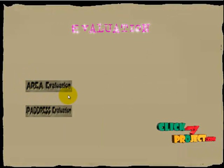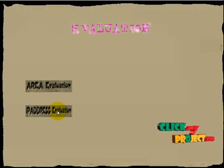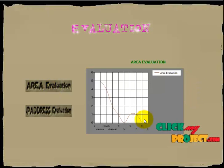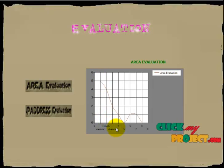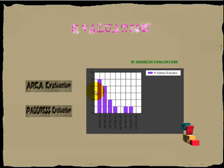After the map display, we go into evaluation. In evaluation, we perform two processes: area evaluation and IP address evaluation. In area evaluation, we collect details of which area is accessing the server most compared to other areas. In IP address evaluation, we evaluate which IP address has the most access on the Wi-Fi server. Now, the area evaluation graph shows that users in Madurai are accessing most frequently compared to other areas. Now, the IP address evaluation graph shows the IP address on the X-axis and access count on the Y-axis, identifying which particular user accesses the Wi-Fi most compared to other IP addresses. The demo of our project is now completed.